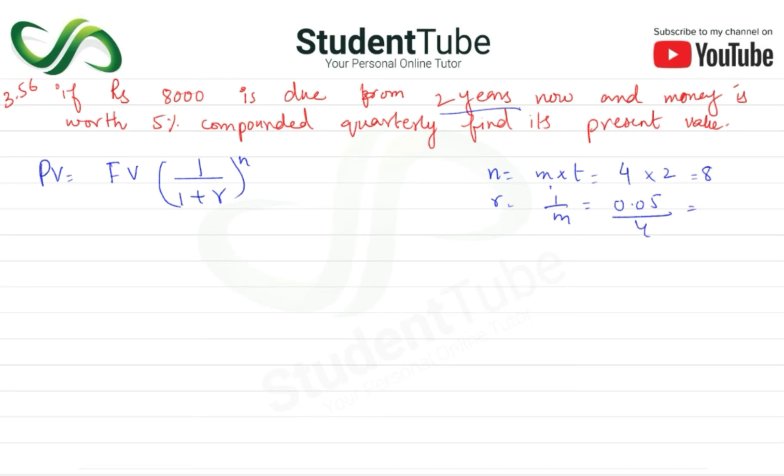So 0.05 ko divide karen 4 se toh aayega 0.0125. So FV 8000, 1 upon (1 + 0.0125), aur n hai 8. So 8000 × 1/(1.0125)^8.